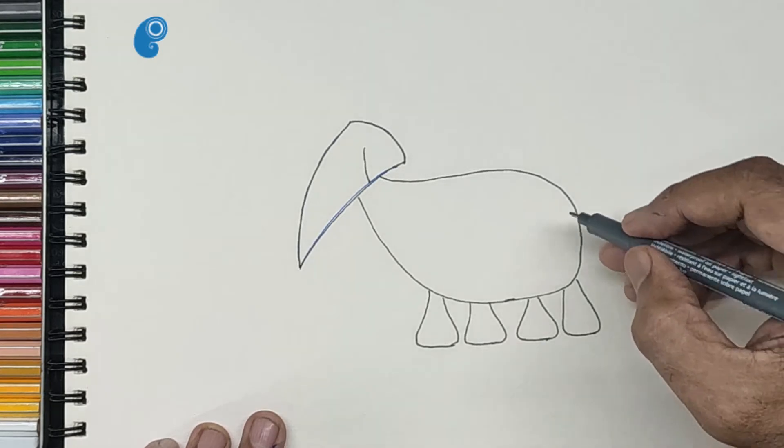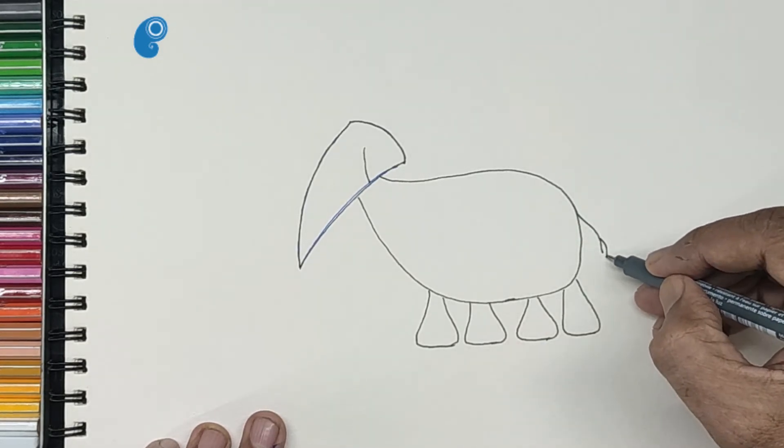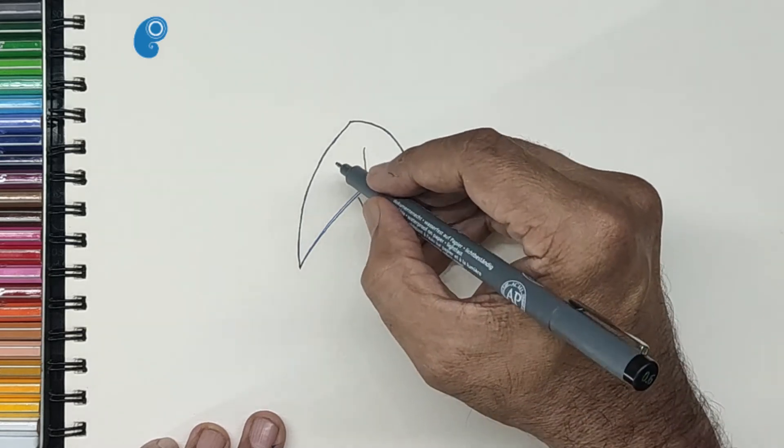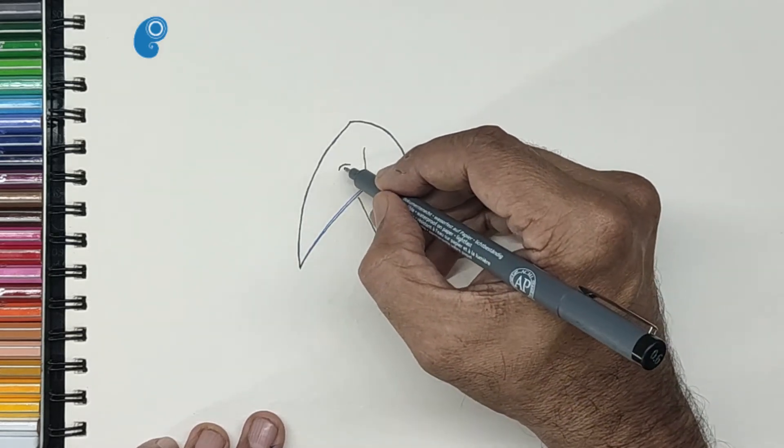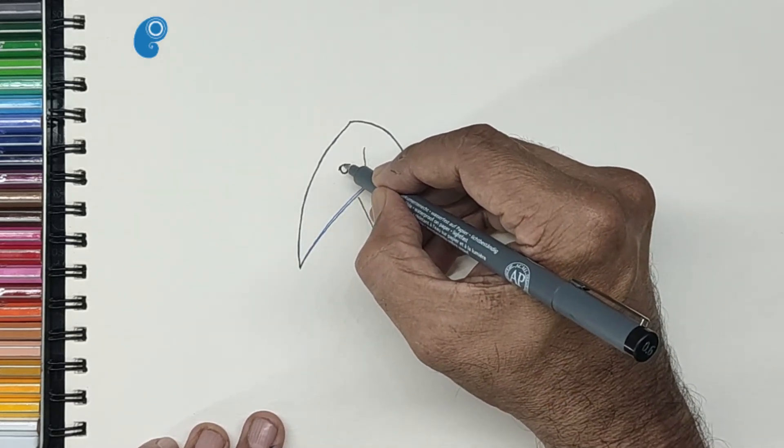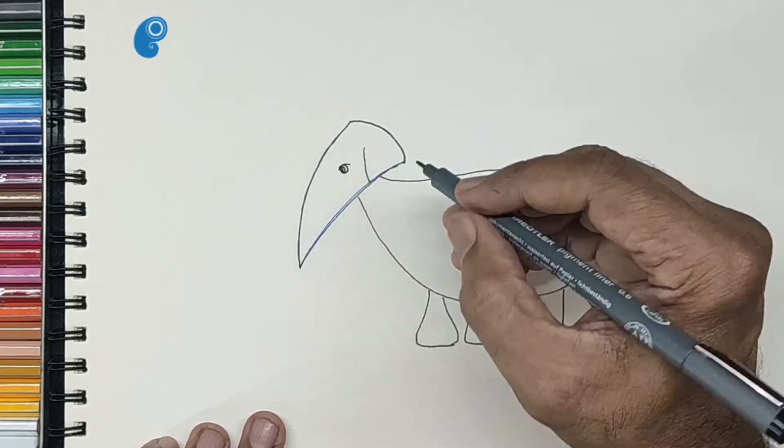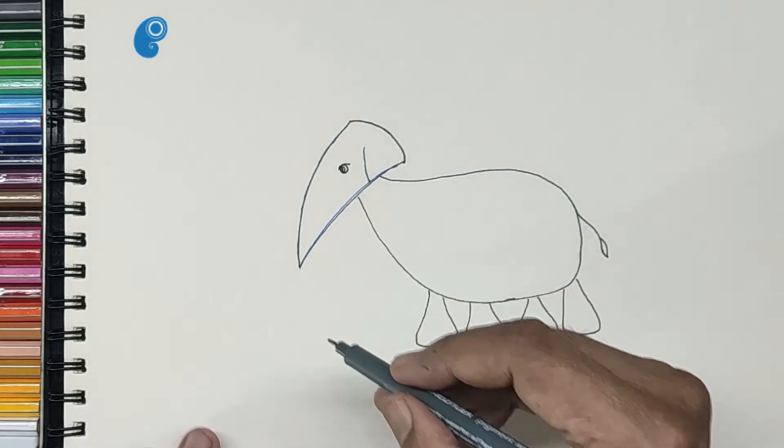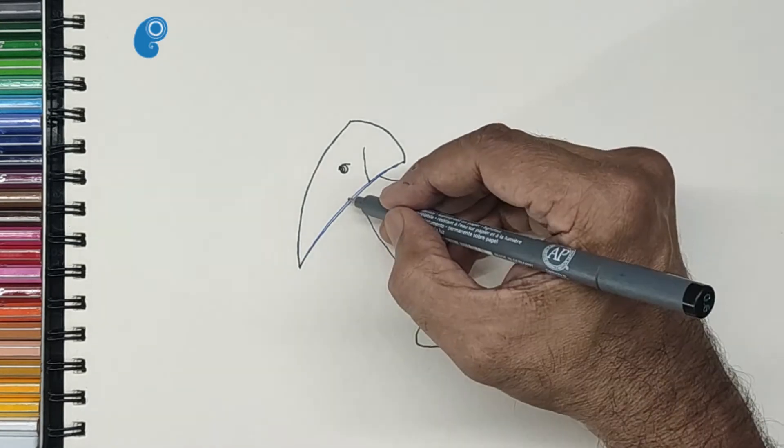Let us add a thin tail. Let us give a small eye. A cute smile.